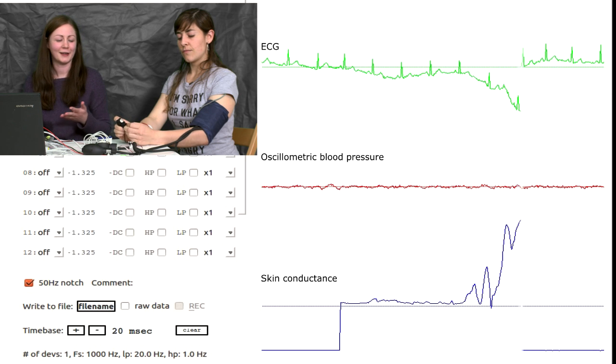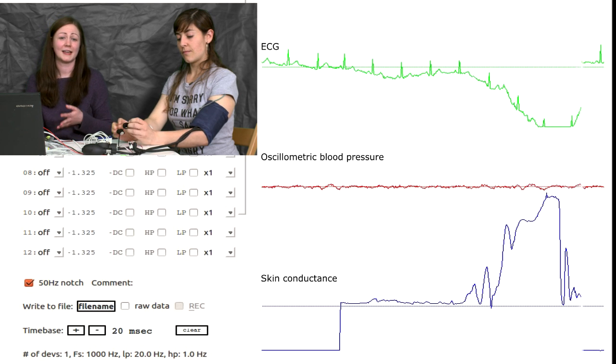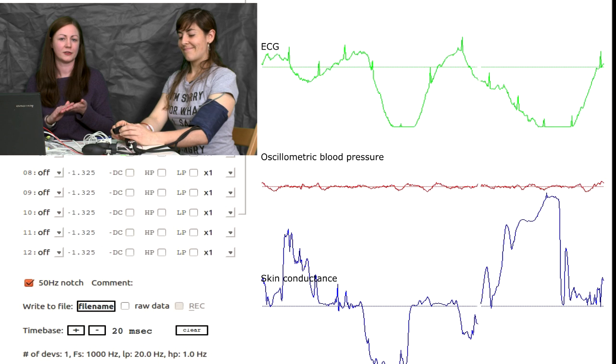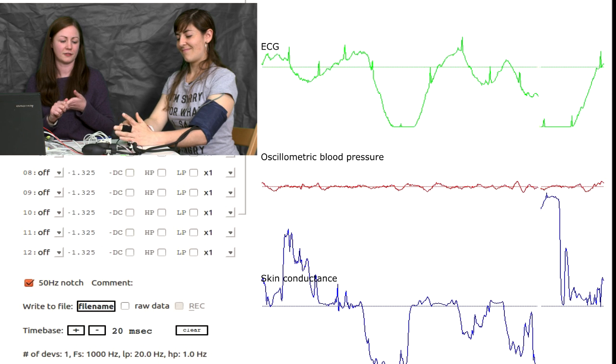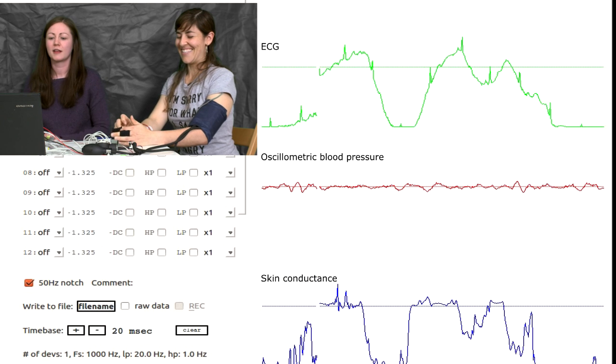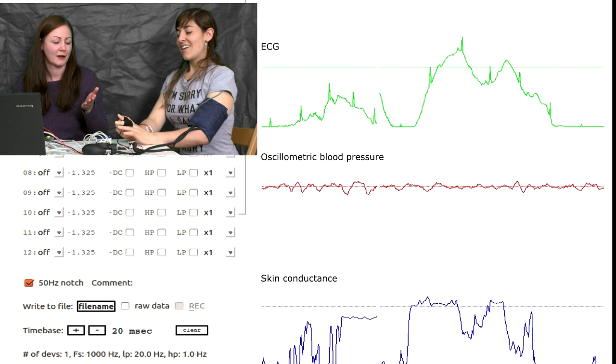So the idea is that skin conductance is used in classical lie detectors. So as Ali lies, we should see changes in her skin conductance as she becomes more sweaty under her fingers. And as she gets more nervous, I'm going to find you out. So just put that on your fingers now.